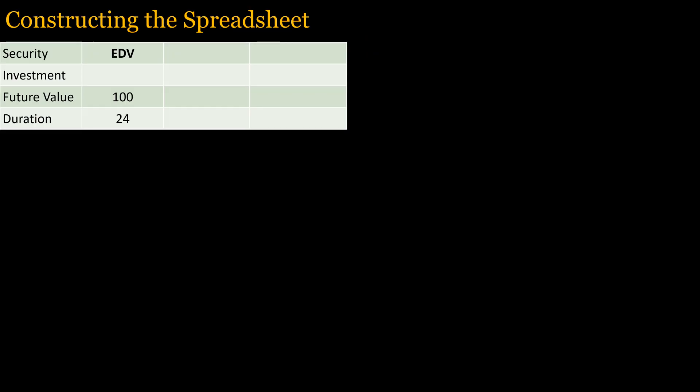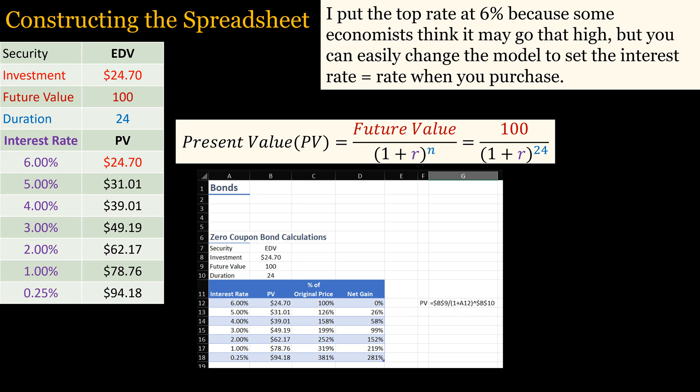Now we will start constructing the spreadsheet. For this example, we will start with the Vanguard long-duration ETF. We first start with a simple table with a future value of 100 and the stipulated duration of 24. Then we add two additional columns. The first column lists interest rates, starting with the interest rate that is current when you purchase the investment. I set the lowest interest rate at 0.25% because the Federal Reserve has lowered it below that at least three times since 2009. The second column consists of the present value of the future value discounted by the interest rate for the number of years equal to the duration. Then put the value of the first present value into the cell listing your investment, as this is how much you would pay for the security given the current interest rate.